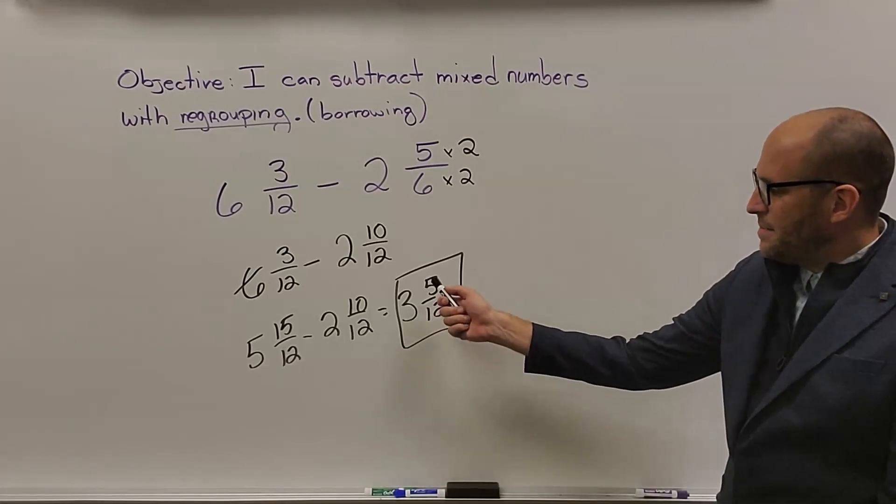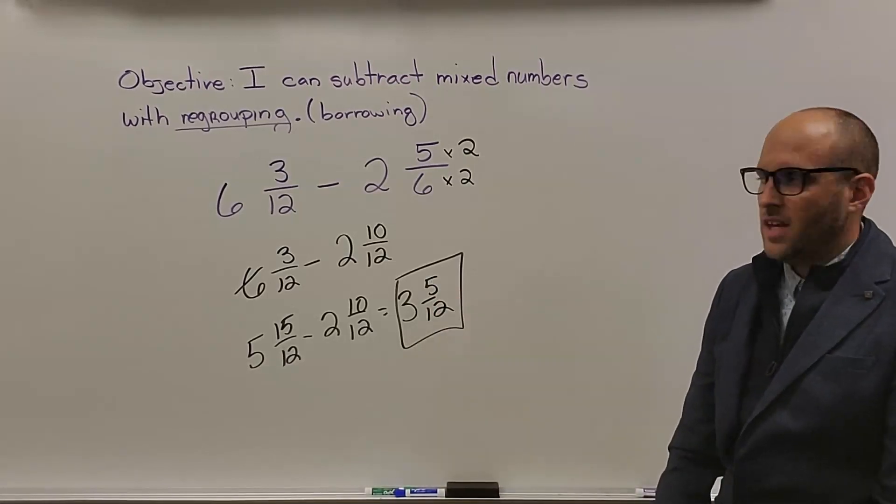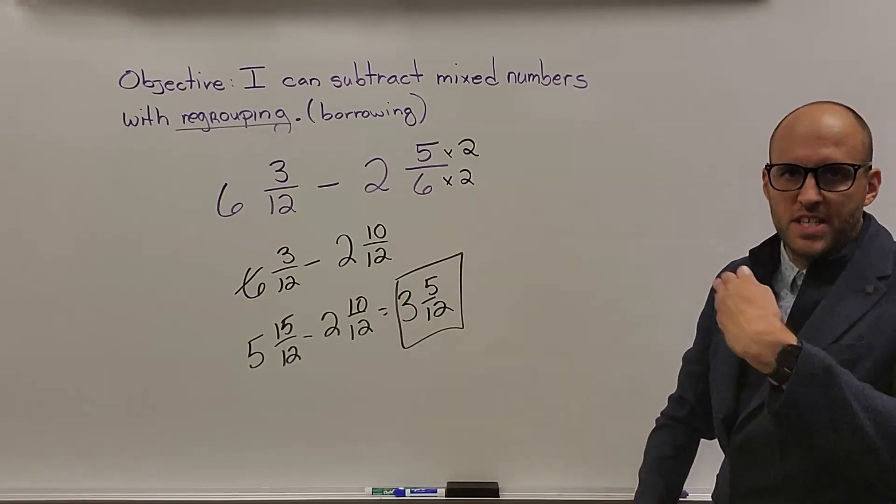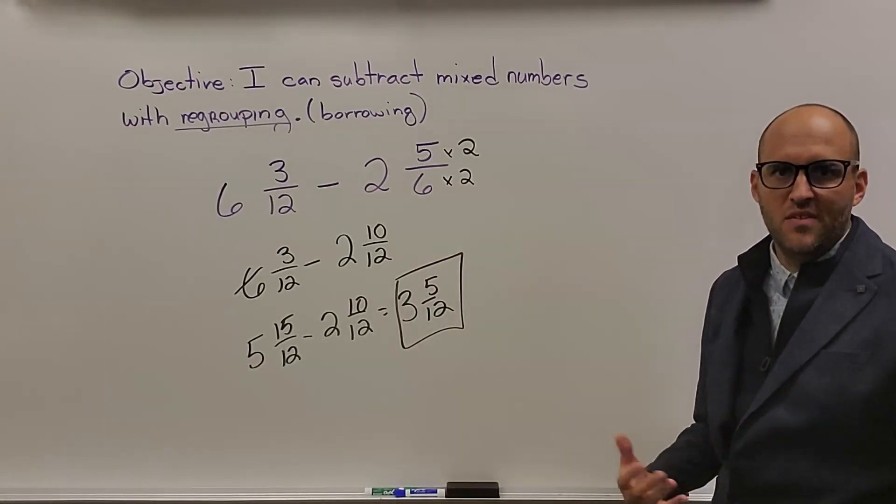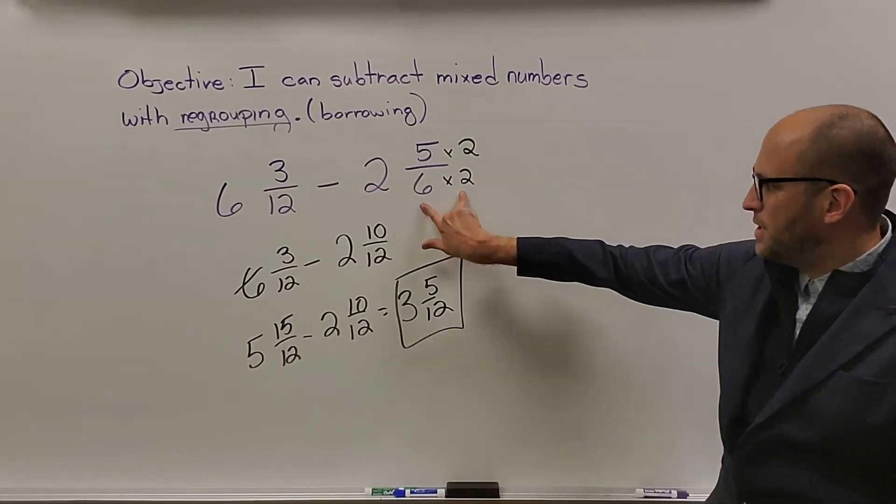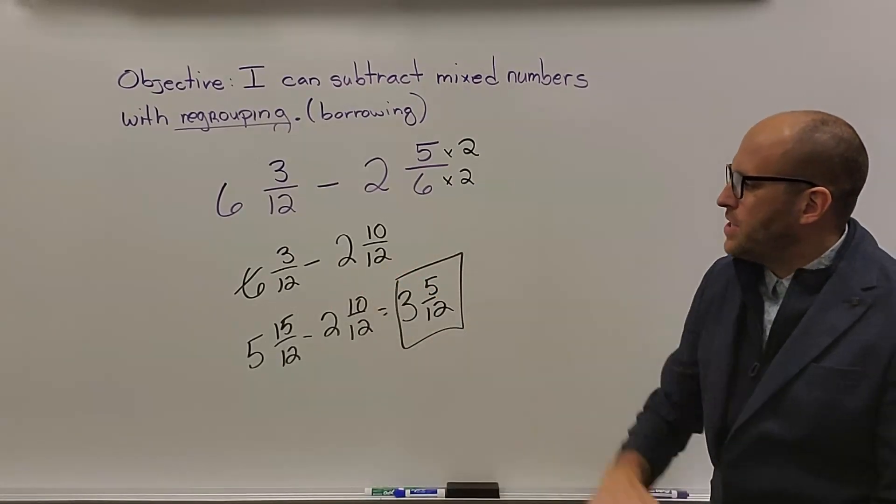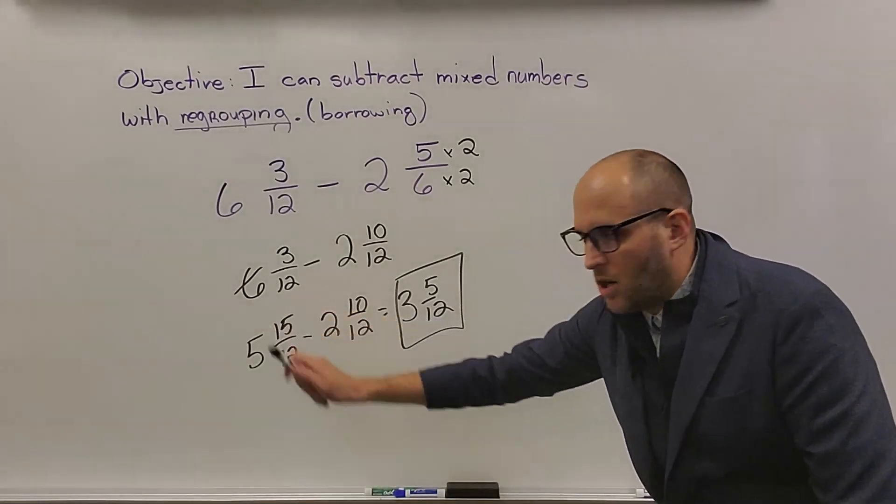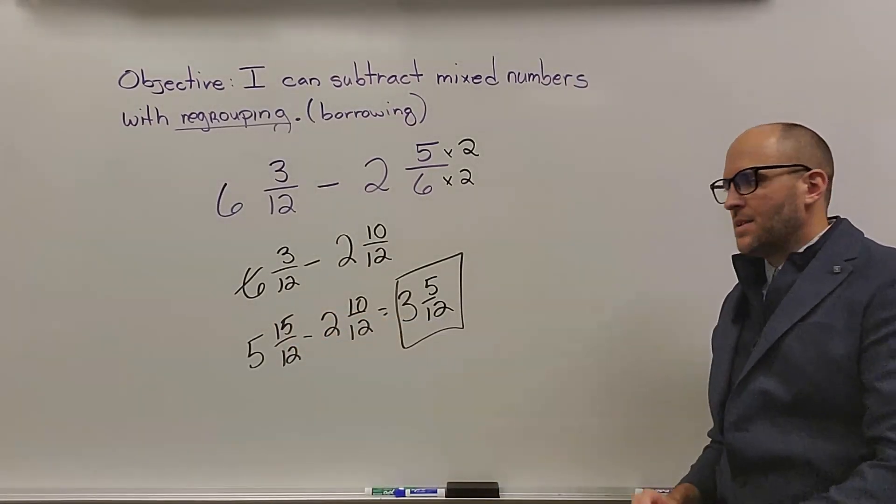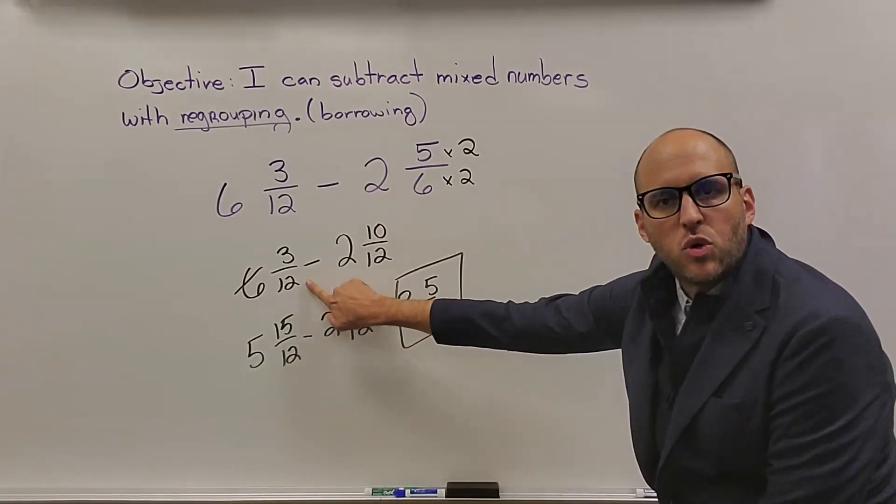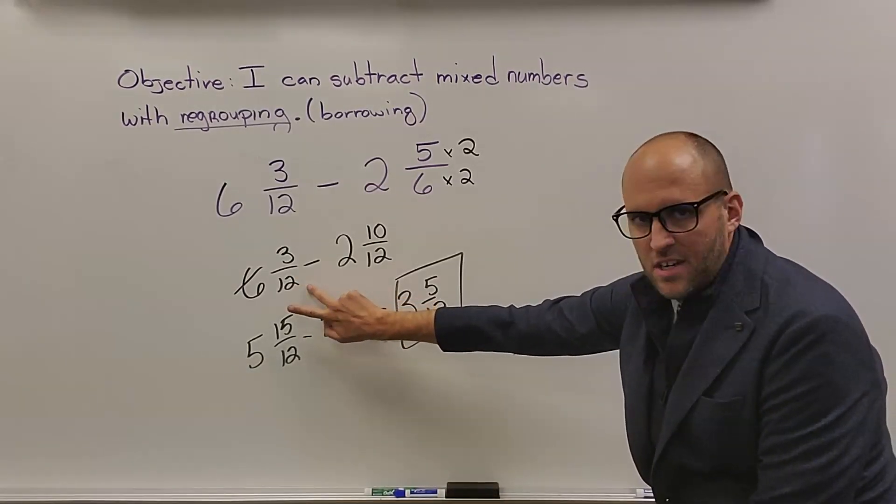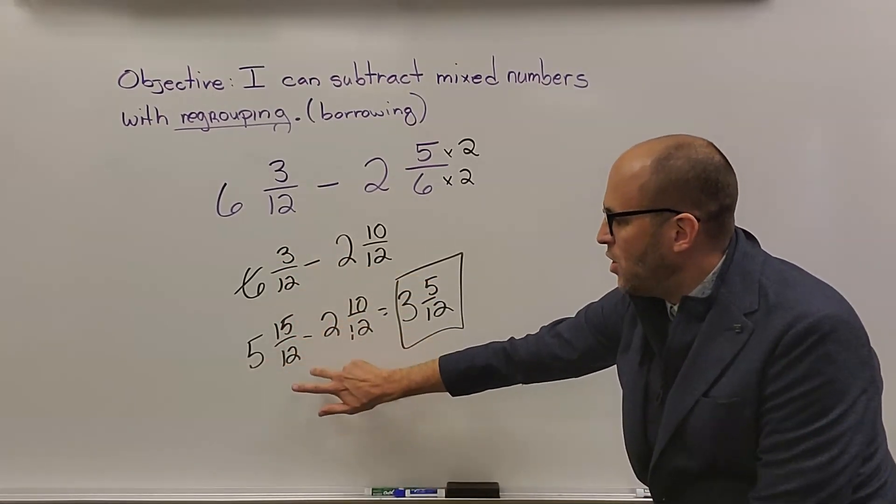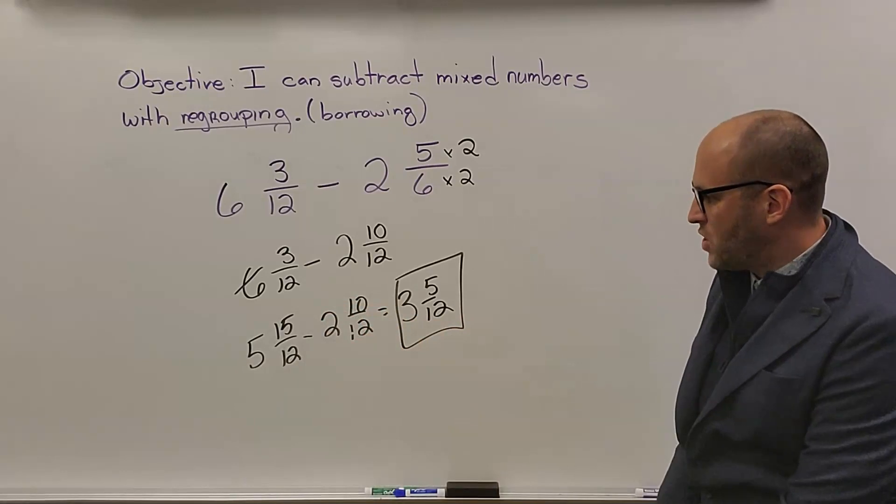Hopefully your answer came out to be 3 and 5 over 12. Again, only had to change one fraction because 6, once we skip count, 6, 12. 12 is obviously what we want both of our denominators to be, so we multiply 6 by 2. We end up with 6 and 3 twelfths minus 2 and 10 twelfths. We have to borrow 1 from the 6 to make it a 5. Again, we have a 12 here, so 12 is our system here. 12 plus 3 is 15, so we have 5 and 15 over 12 minus 2 and 10 over 12.